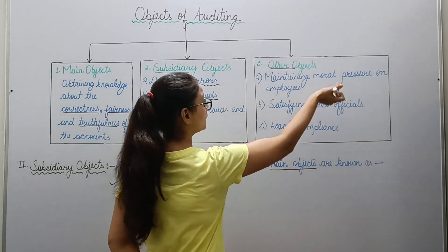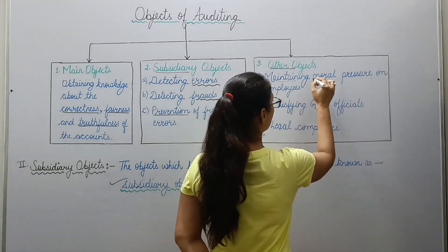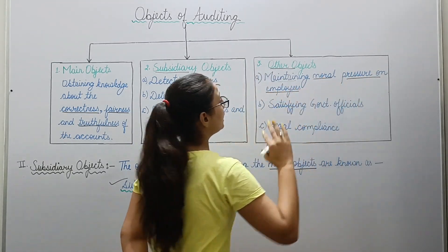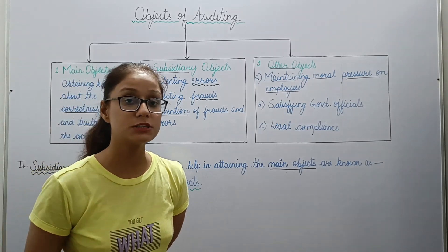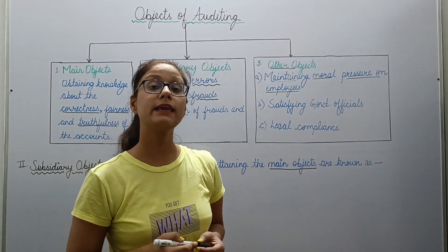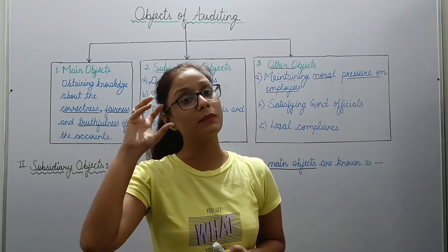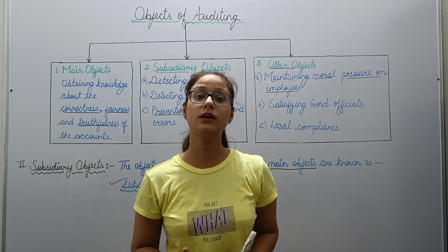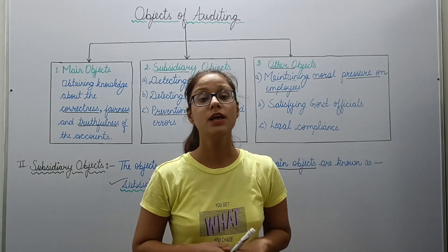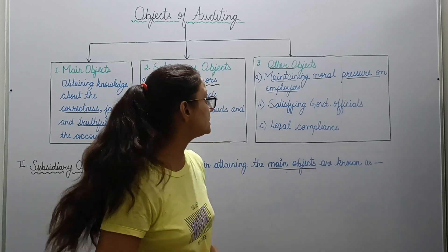Third are your other objectives. Apart from these, some of your objectives are like maintaining moral pressure on employees. You maintain moral pressure on your employees and workers through auditing, so that they do not do any manipulations. Their mind should be set that our accounts can be audited or checked at any time.